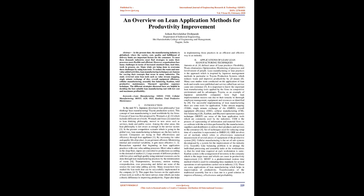A large amount of different products with low price and high quality using minimal resources can be achieved through lean manufacturing practices by minimizing waste. Transportation, inventory, motion, waiting, overproduction, over-processing, and defects are sources of non-value-adding activity. Many researchers have studied lean tools that can be successfully implemented in companies. This paper focuses on the application of lean tools and the latest surveys that can make a drastic difference in improving productivity, and also helps in implementing these practices in an efficient and effective way.